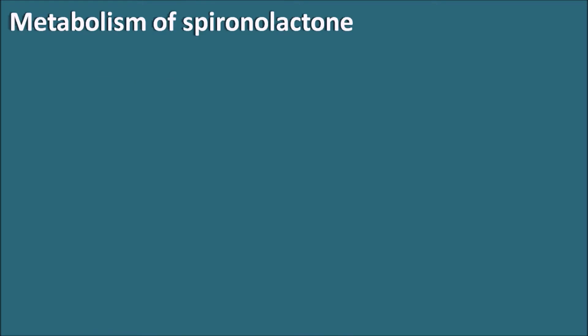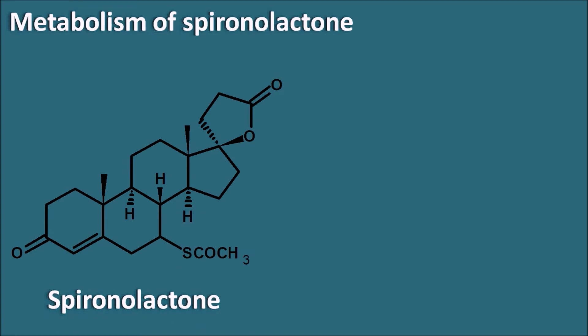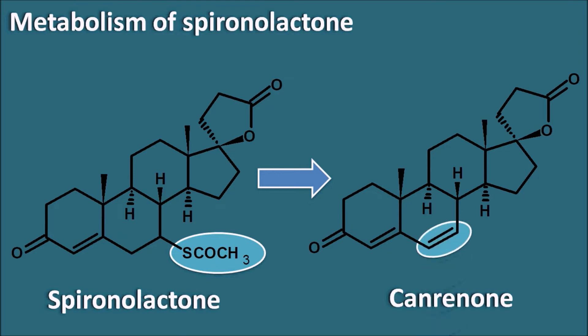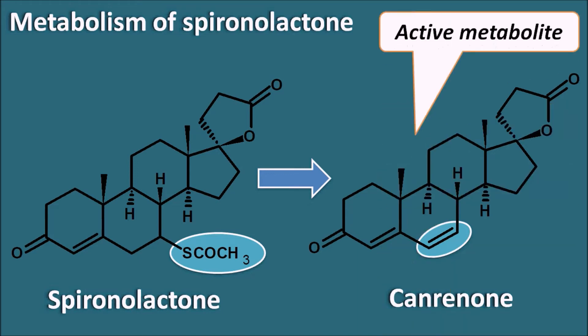Spironolactone is metabolized to an active metabolite called canrenone. The structural difference is that spironolactone has an acetylthio group, which is absent in canrenone — replaced by a double bond. During metabolism, spironolactone undergoes hydrolysis where the acetylthio group is converted to a thiol group, which is then removed to form the double bond in canrenone. Canrenone has a longer half-life than spironolactone and is an active metabolite.